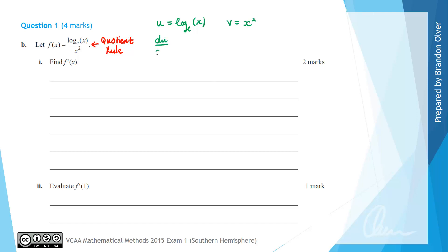Then we calculate du/dx which is going to be 1 over x, and we can use our formula sheet to see that. And dv/dx is going to equal 2x.